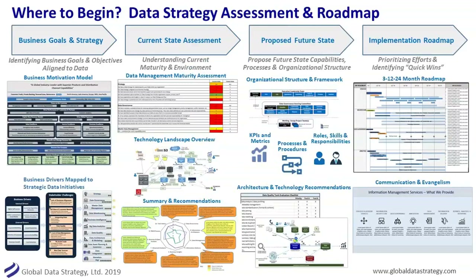Where to begin? We use this process in our consulting practice when we do an assessment. Generally, a strategy shouldn't last forever — you might take six weeks or a short period of time, but don't skip any of these pieces. The first piece is understanding business goals and strategy: what are our business motivations, why are we doing this, and how does that map to our data initiatives? The second column is a current state assessment — both where you are in technology and also in governance and culture.